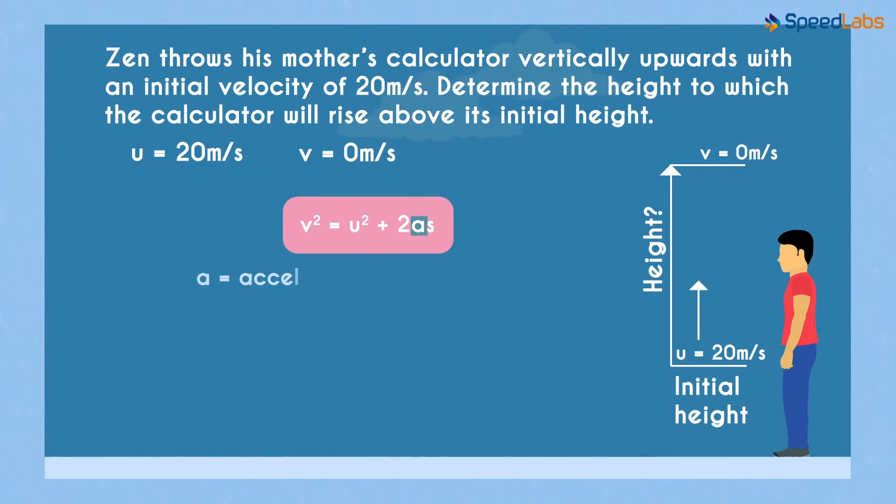Here A will be the acceleration due to gravity and S will be the distance the body has covered. In this particular example, S will be the height to which the calculator travels just before it begins its descent.